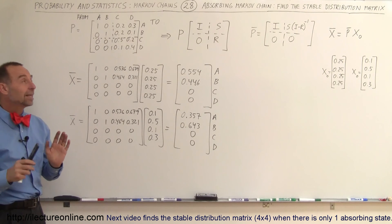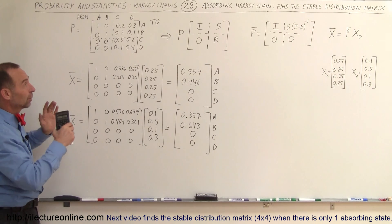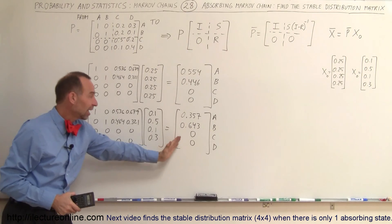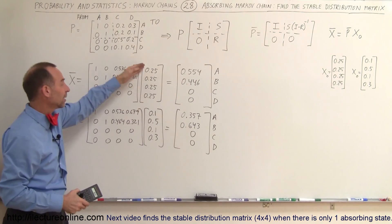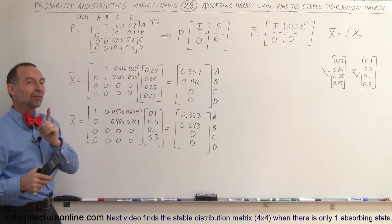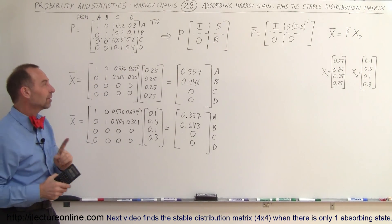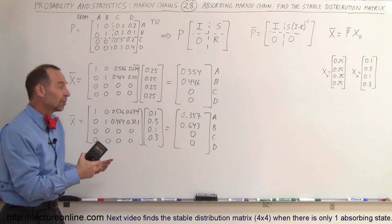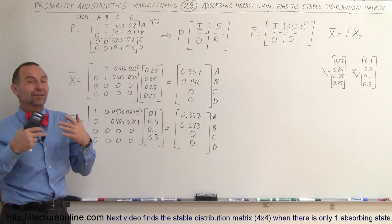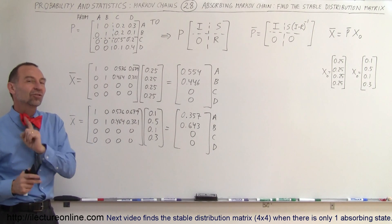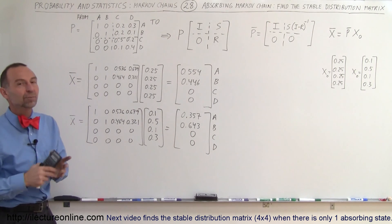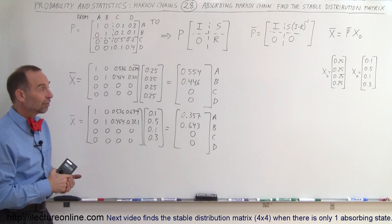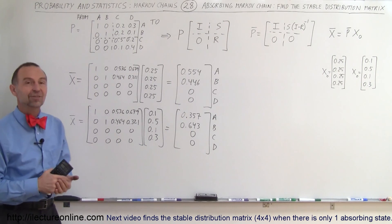When you have an absorbing Markov chain with more than one absorbing state, the final state simply depends upon the initial state. If you have only one absorbing state or a non-absorbing Markov chain, the final state will always be the same set of numbers regardless of the initial state. That's how you tell the difference and that's how you do it.